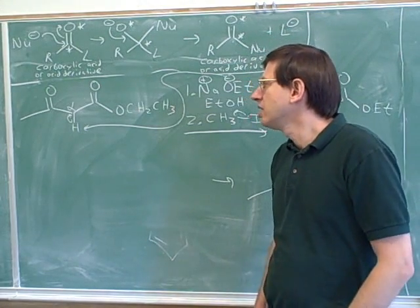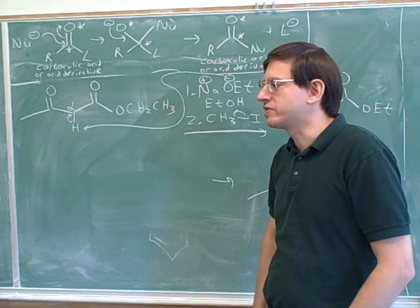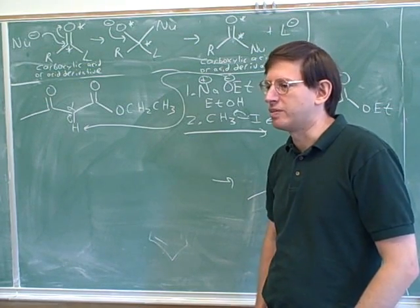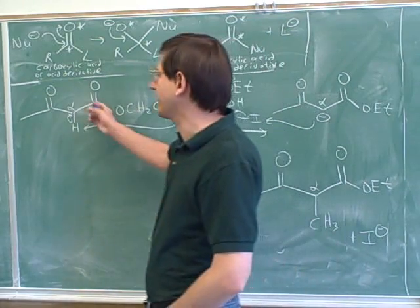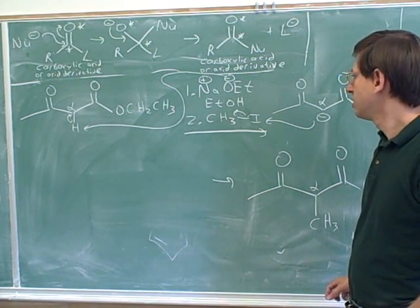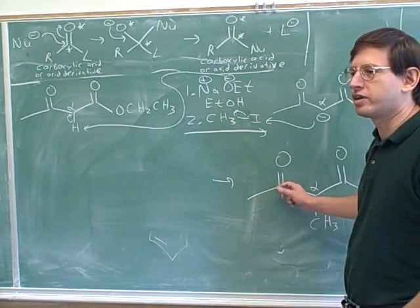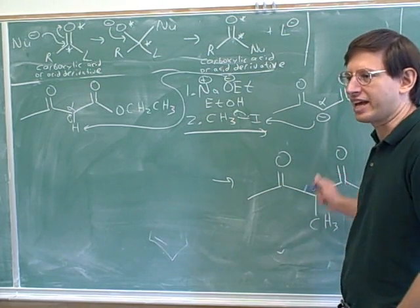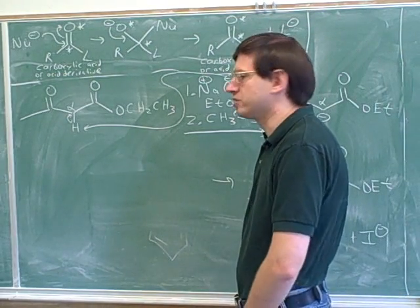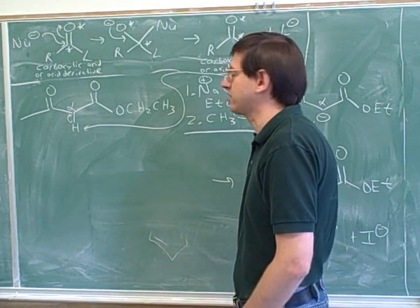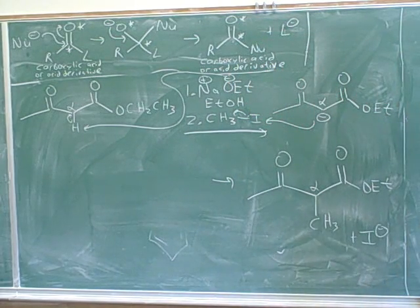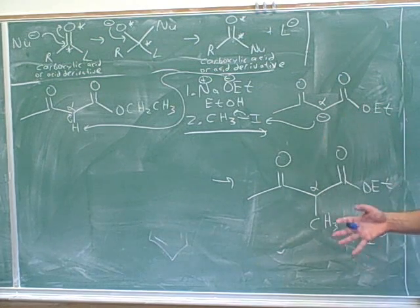Well, remember that an aldol condensation involves attacking an aldehyde or ketone. And we've seen when you attack an aldehyde or ketone, you can't reform the carbonyl that was attacked. So, that's why one of the carbonyls gets destroyed. But in the Claisen condensation, we're attacking an ester which can reform the carbonyl. And therefore, you end up with two carbonyls. One carbonyl from the molecule that formed the enolate and one carbonyl from the molecule that suffered the electrophilic attack. Because you were able to reform the carbonyl that was attacked, you ended up with the two carbonyls. That's why they're in separate chapters in the book.